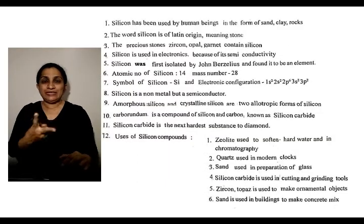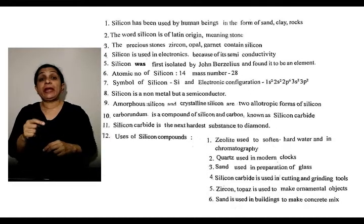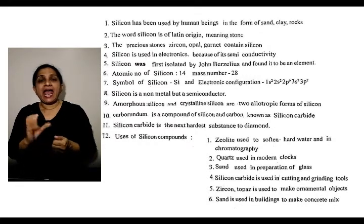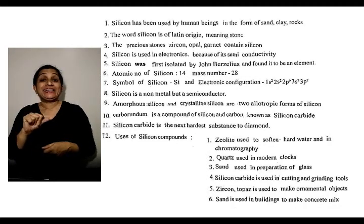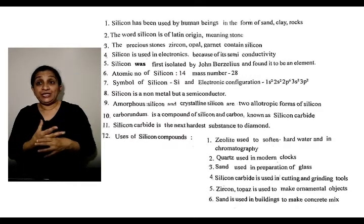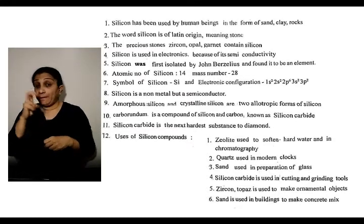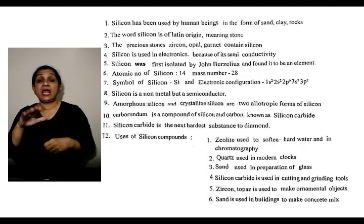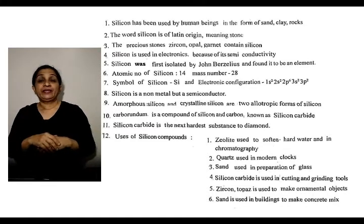Mercury is the metal in liquid state. Now we will see about the element silicon. Silicon has been used by human beings in the form of sand, clay, and rocks. The word silicon is of Latin origin, meaning stone. Precious stones like zircon, opal, and garnet all contain silicon.